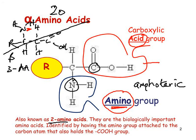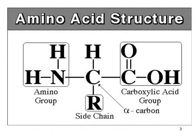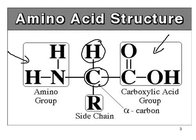There are twenty so-called alpha amino acids. In common, they all have a central carbon with a carboxylic acid group attached directly to it, a hydrogen directly attached, and an NH2 or amino group attached. The twenty amino acids differ only in what is attached at the R group, also known as the side chain.